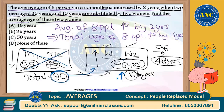Beautiful question, Ashok. You cannot find the individual ages. If you want to find the individual ages, some other extra information should definitely be given. In this question, you cannot find the individual ages. If the question is to find the individual ages of the two women, the answer will definitely be: cannot be determined uniquely.